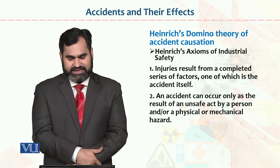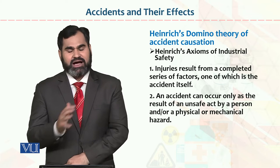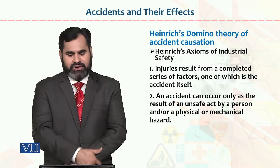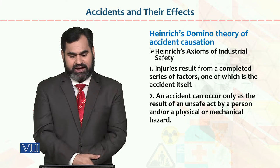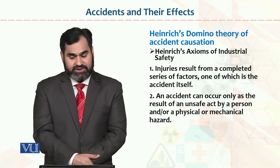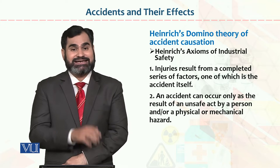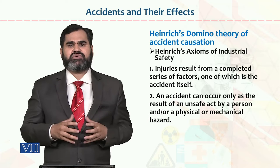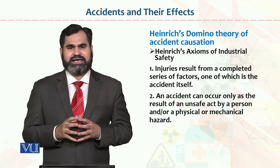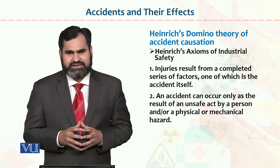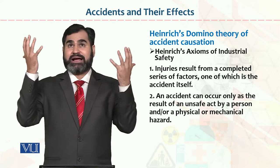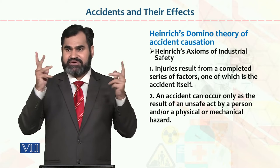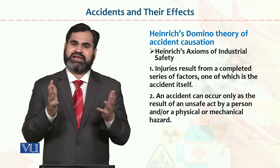Heinrich domino theory of accident causation کا ایک اہم aspect industrial safety کے ساتھ اس کا link ہے۔ پہلا point: injuries result from a completed series of factors, one of which is the accident itself. اگر کام کرنے سے پہلے اچھی طرح safety measures دیکھے جائیں تو chances of injuries will be less.